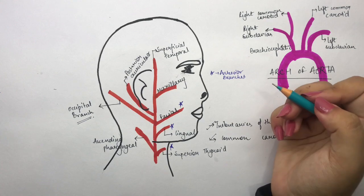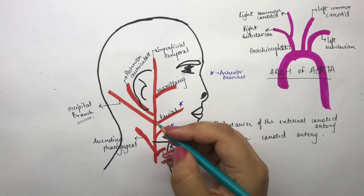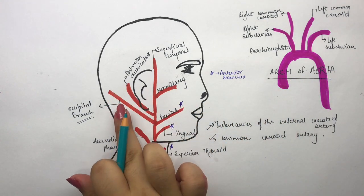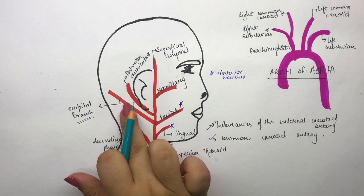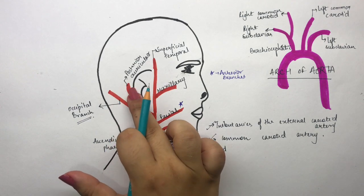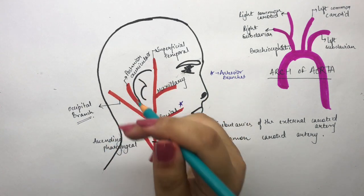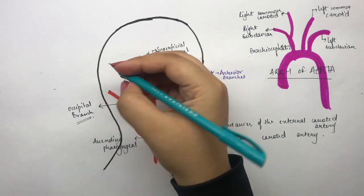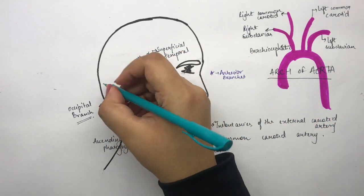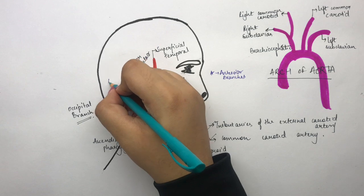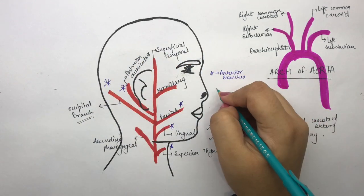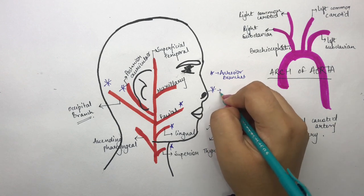Next, the posterior branches: there are two — the occipital branch, which goes posteriorly, and the posterior auricular branch. The name 'posterior auricular' already indicates its direction, so it's easy to remember. These two are our posterior branches.